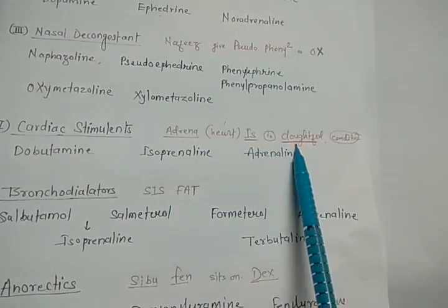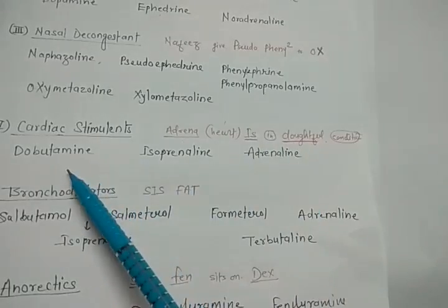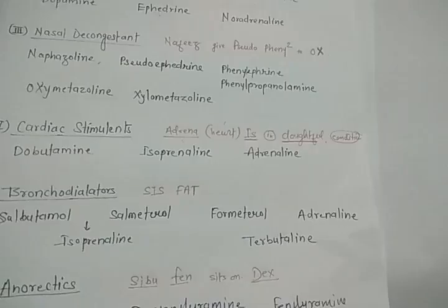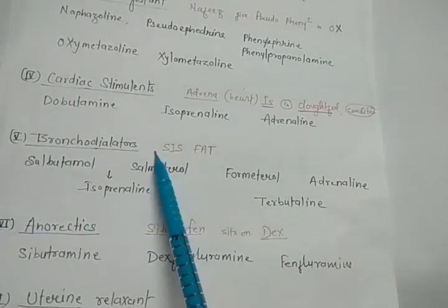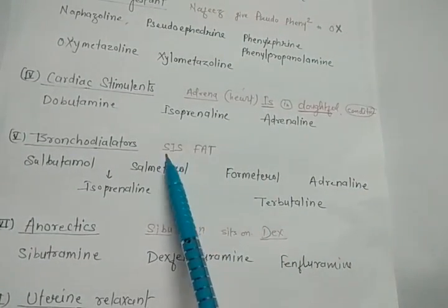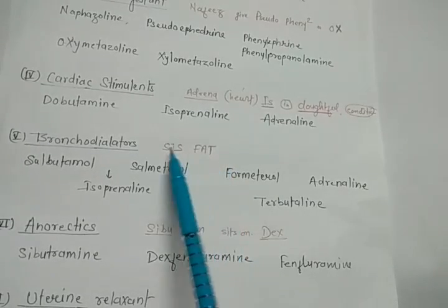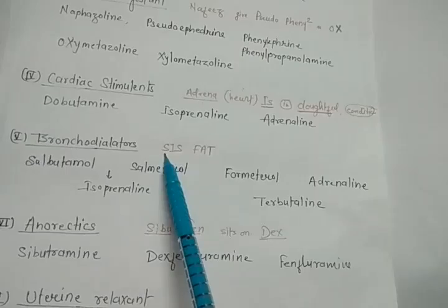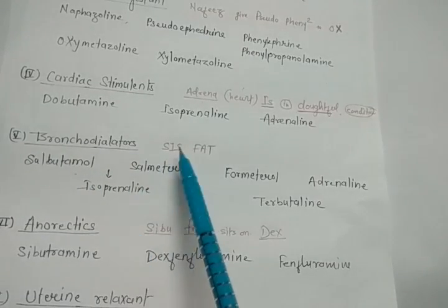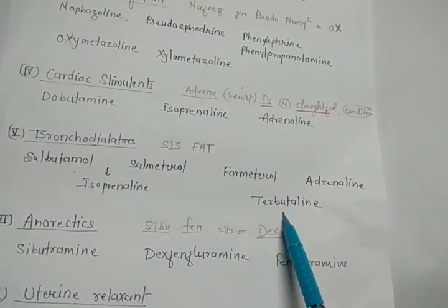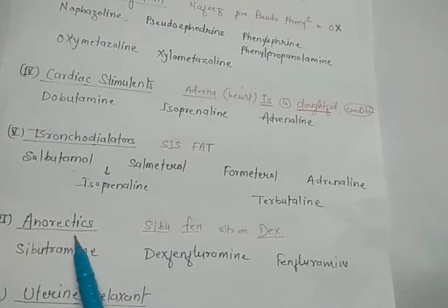For bronchodilators, the trick is CISFAT: S = salbutamol, I = isoprenaline, S = salmeterol, F = formoterol, A = adrenaline, T = terbutaline.